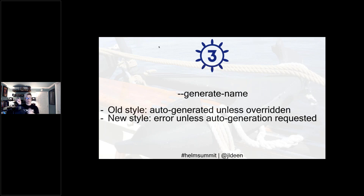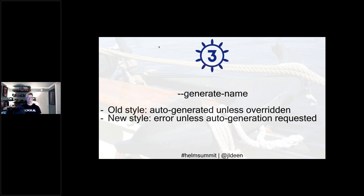Another big change: previously with `helm install` or `helm upgrade --install`, you could just specify the chart name and repository and Helm would generate a funny name like 'jumping turtle' or 'dancing squirrel.' That's no longer the default behavior. If you don't specify a name and don't use the `--generate-name` flag, you'll get an error. You must either use `--generate-name` or provide a name — primarily because in production you're going to specify a real name anyway.